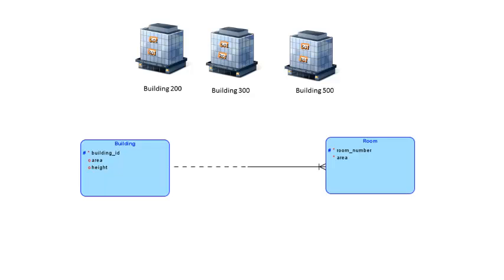Together, building ID and room number make up the primary key for room, because across the company, we cannot identify a room just by the room number — you have to tell me the building ID and then the room number. Our entity relationship diagram has building with some attributes and room with some attributes. Every building doesn't have to have a room — some buildings may be factory buildings with no office rooms — but every room has to be in some building. It's a one-to-many relationship because a building can have many rooms, but a room can be in only one building. Notice that we have used the key migration notation here because the primary key for room is building ID combined with room number, and we indicate this by putting the key migration notation on the diagram.